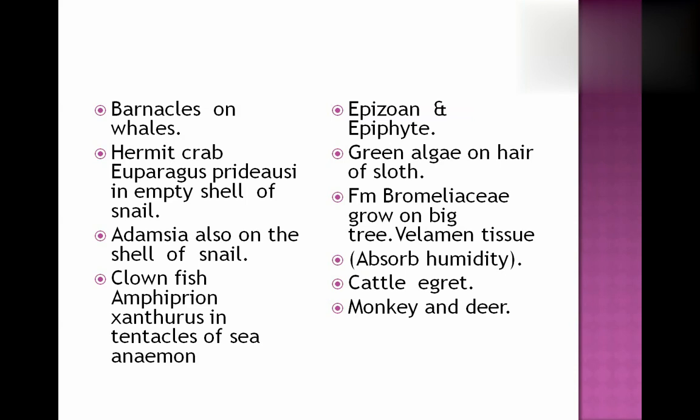Members of family Bromeliaceae grow on big trees, getting shelter and protection. They have velamen tissue which absorbs humidity and nutrition from big plants. Cattle egrets follow cattle and get nutrition from insects, mites and ticks on the body of cattle. Monkeys live on trees and below those trees deer live, getting food from the droppings of monkeys.